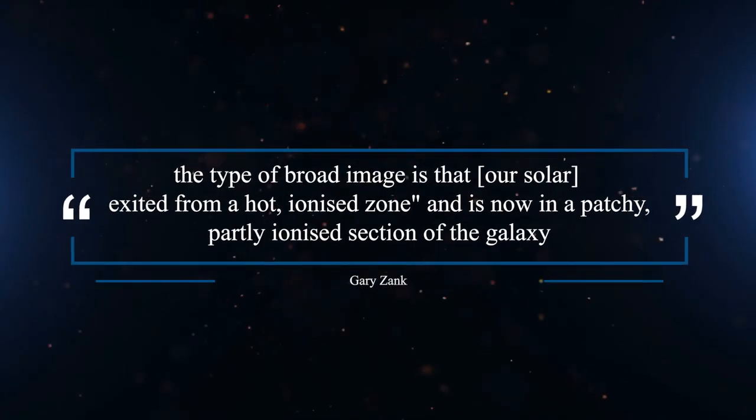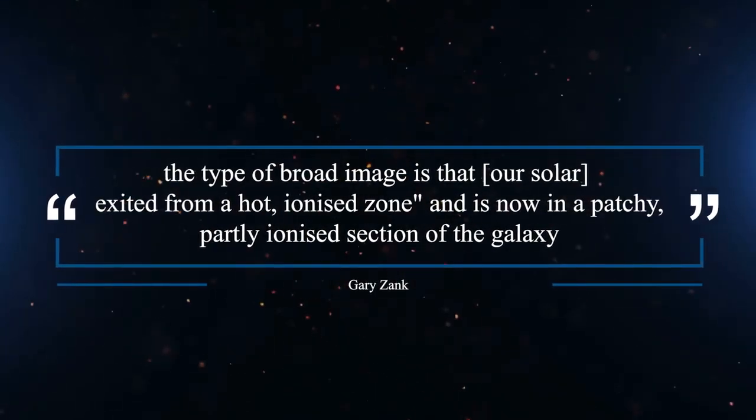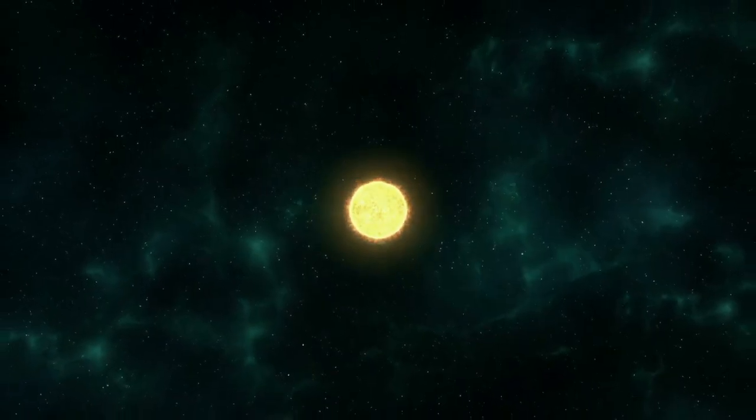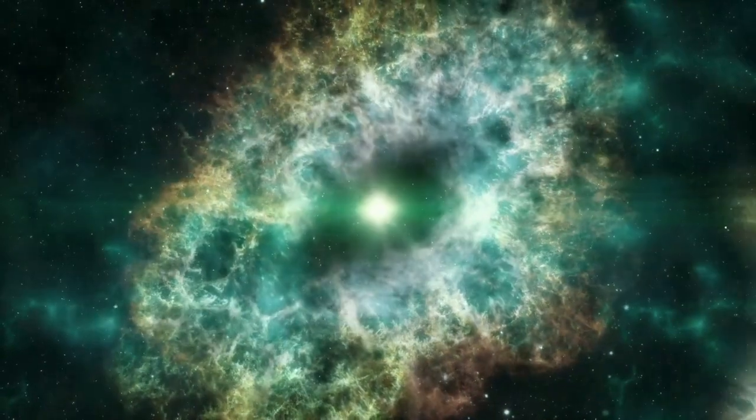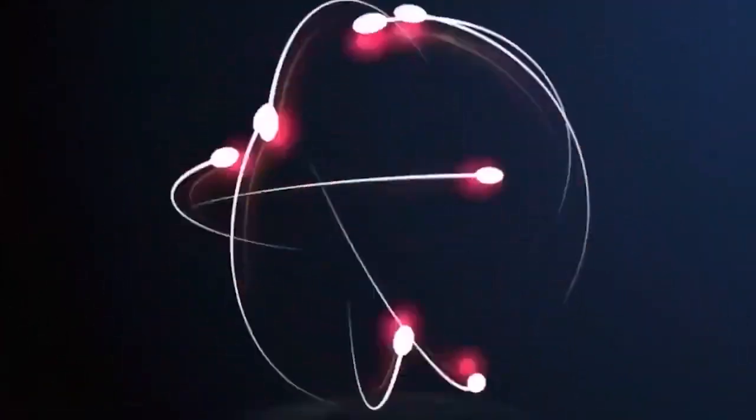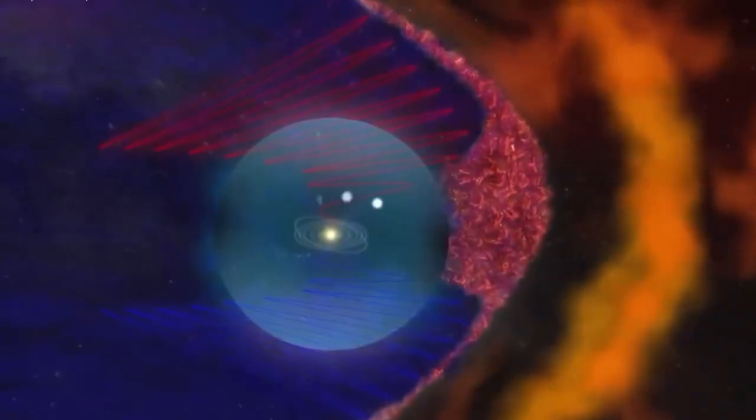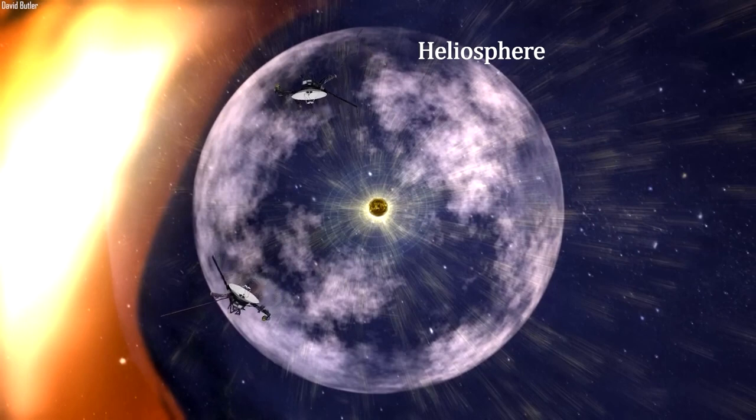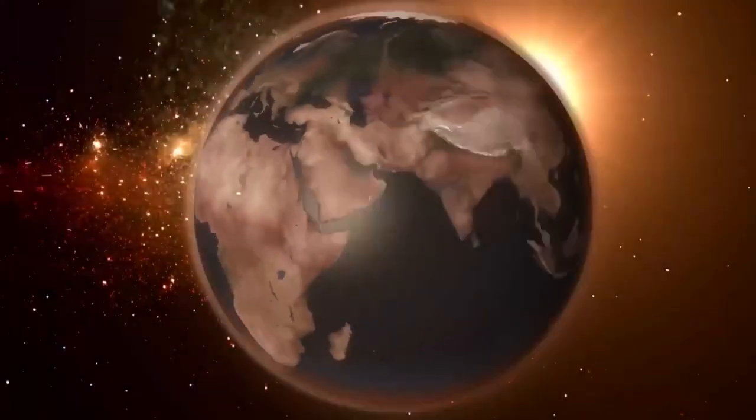UAH astronomer Gary Zank says, the type of broad image is that our solar exited from a hot ionized zone and is now a patchy, partly ionized section of the galaxy. An old star or stars in the vicinity likely erupted at the end of their life as a supernova, releasing so much energy that they heated the surrounding environment to the point that electrons were stripped from the atoms. The border of that region is analogous to a beach, replete with surf and ebbing tides. When we travel into a zone with so much disorder, magnetic fields become entangled and can be reversed.